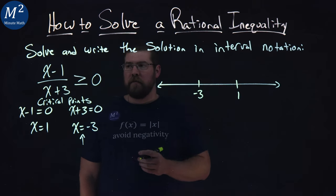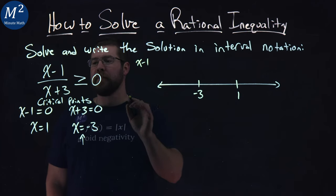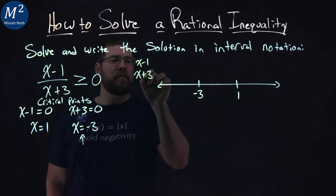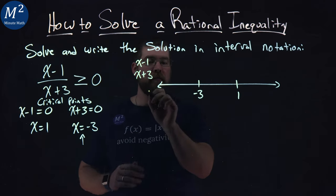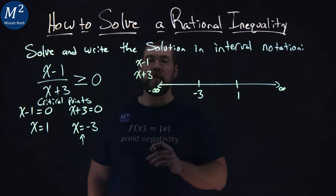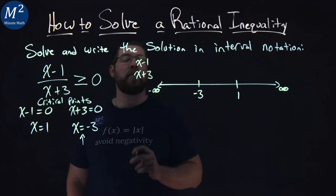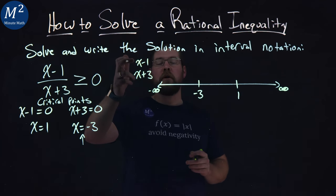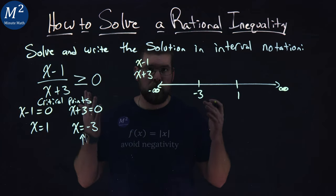So now I want to ask myself a few questions. I'm going to look at our two parts, the numerator and denominator. I have x minus 1 and x plus 3. I'm going to pick a number that's between negative infinity and negative 3, a number in that range, and I'm going to see what happens when I plug it in. Let's pick negative 10.